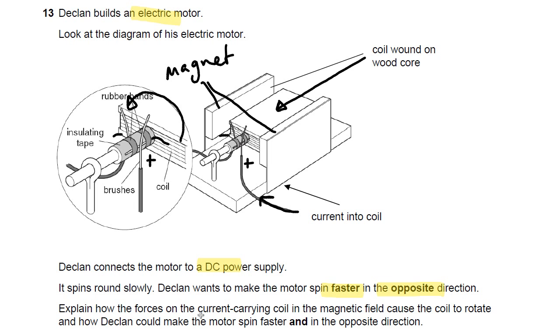Explain how forces on the current-carrying coil in the magnetic field cause the coil to rotate. That's the first part. You've got to explain basically how the motor works. And then the second part is how could Declan make the motor spin faster and in the opposite direction. This is one of these six-mark quality of written communication questions. So think about how you're going to set out your answer.